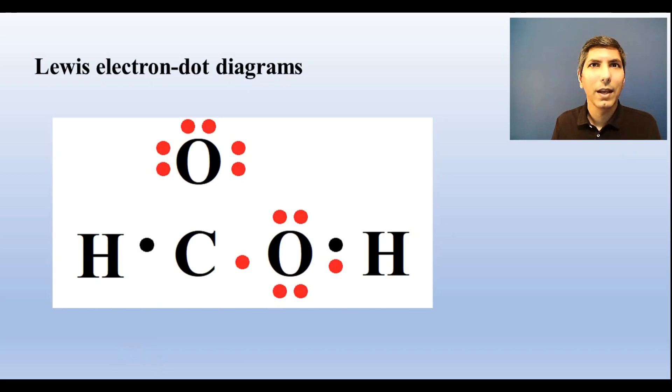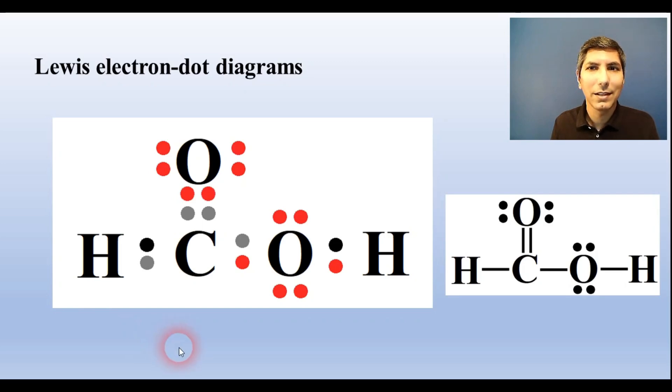The oxygen on top brings in six dots and so does this one over here on the right. The carbon brings in four dots. Now the way this is drawn, the carbon in the middle only has six dots and it needs eight, so I'm going to move a pair of dots from the oxygen down to the middle just like this, and now that puts a double bond between the carbon and the oxygen here. So we can draw this with lines representing the pairs just like this in our Lewis electron dot diagram.